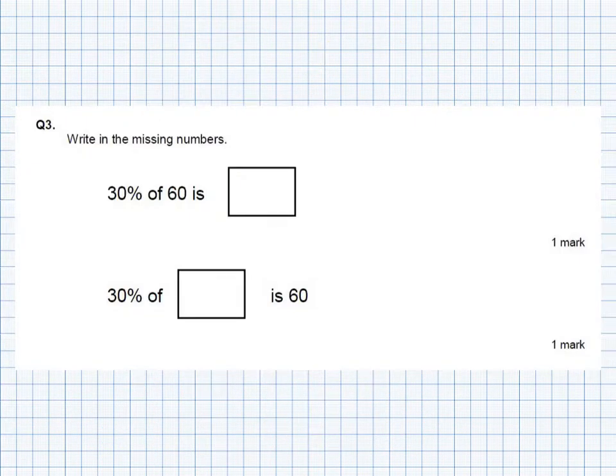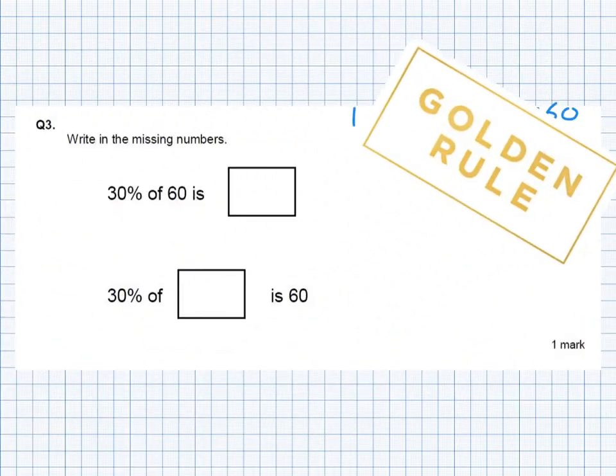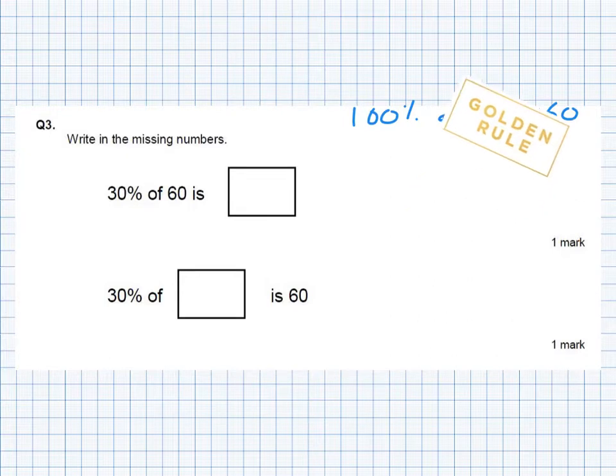Right, and on to our last two questions. Question 3 divided into two questions here. We've got 30% of 60 is something. So 100% of 60 is 60. I always find, because this is my golden rule, which we've talked about before. My golden rule is find 10% first.